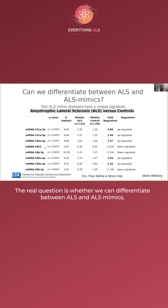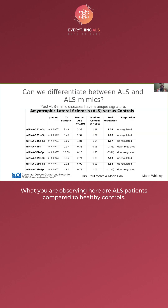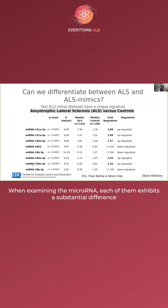The real question is: can we differentiate between ALS and ALS mimics? And the answer is definitively yes. What you're looking at here are ALS patients versus healthy controls. When you look at the microRNA, every one of them has a very large difference that we can look at and identify statistically.